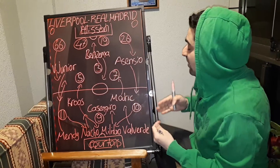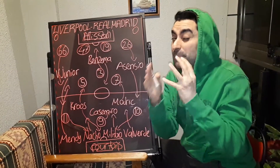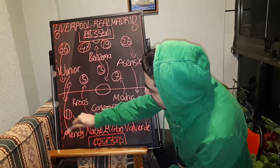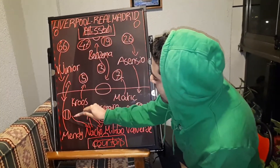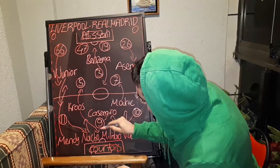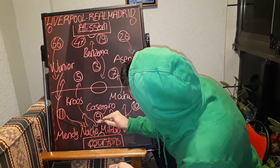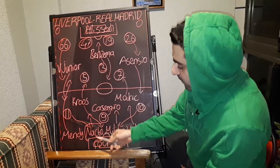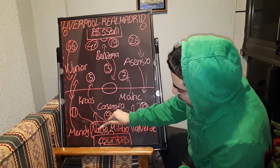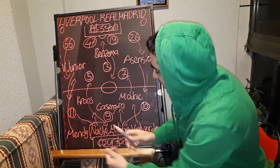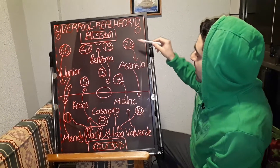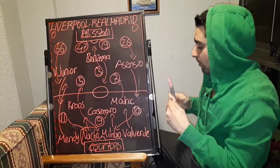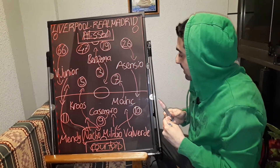In the second half, Liverpool started better and faster. Liverpool developed attacks especially from the left side of Real Madrid, and every time Firmino got into the Real Madrid box between Mendy and Nacho. He found a few goal-scoring positions from Real Madrid's left wing-back side. Robertson and Alexander-Arnold supported all attacks.